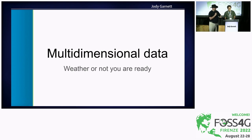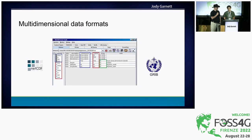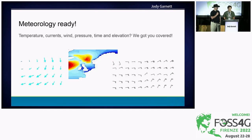We also support multi-dimensional data. Multi-dimensional data typically comes with time and elevation dimensions that you can use to slice the dataset and look at them in WMS or WMTS, or download them through WCS. Through WCS you can also download the full dataset with all the dimensions using NetCDF as an output. The symbology is meteorology-ready, so you can make the maps that you need.